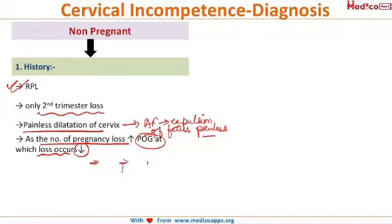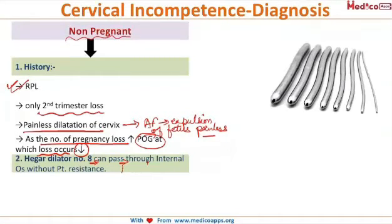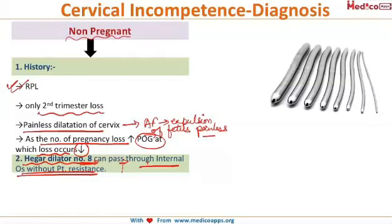That is, in cases of cervical incompetence, successive pregnancies will abort at lesser gestational ages. Diagnosis in the non-pregnant state is not very conclusive. However, Hegar's dilator can be used — if Hegar's dilator number 8 passes easily through the internal os without patient resistance and without pain, then cervical incompetence is diagnosed.